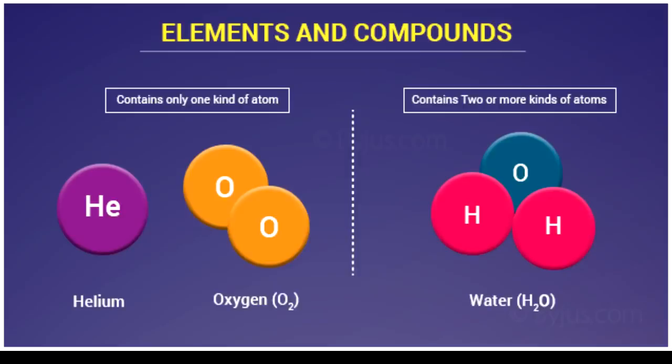There are different types of atoms. It's a compound. Examples of elements are hydrogen, helium, oxygen, carbon, etc.